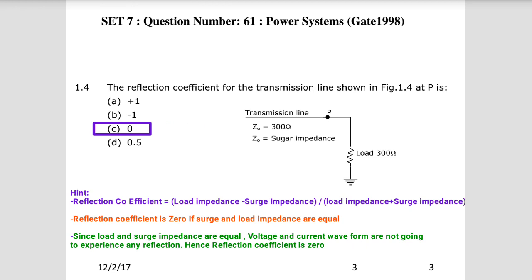The reflection coefficient equals load impedance minus surge impedance divided by load impedance plus surge impedance. In this case, both are equal so the reflection coefficient is 0. Since load and surge impedance are equal, the voltage and current waveforms will not experience any reflection. If the values were different, you would calculate using this formula: reflection coefficient = (Z_L - Z_s) / (Z_L + Z_s).